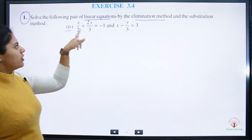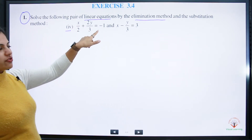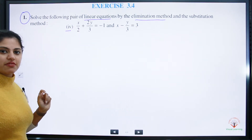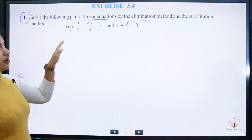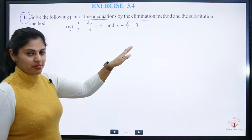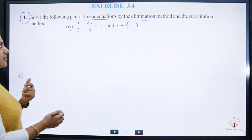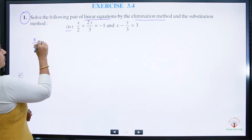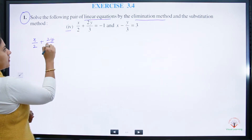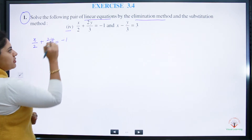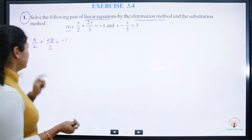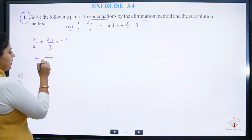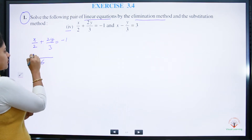First, we will look at the equations. The first equation is x over 2 plus 2y over 3 is equal to minus 1. This is in fractional form. First of all, we have to rearrange them so that the method is easy to apply. I will start with equation number 1 and take the lowest common multiple of 2 and 3.